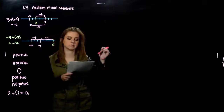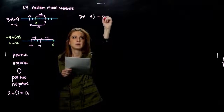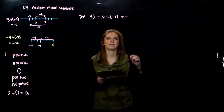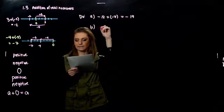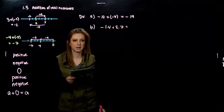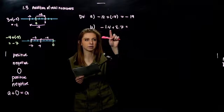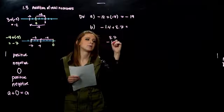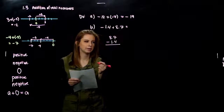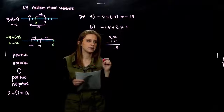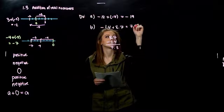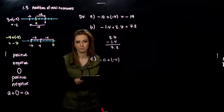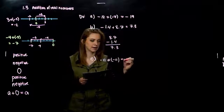So without using a number line, let's add these together. Negative 12 plus negative 7 — they're both negatives, so my answer should be a greater negative: negative 19. Negative 1.4 plus 8.7 — it's going to be positive because the positive number is larger than the absolute value of negative 1.4. So 8.7 minus 1.4 gives us 7.3. And for part C, negative 11 plus negative 11 — we get negative 22.